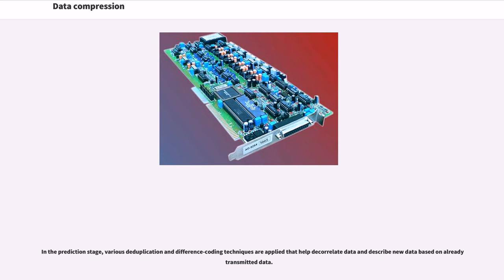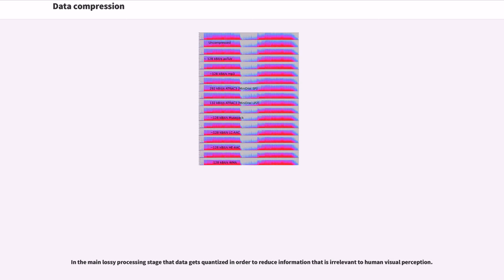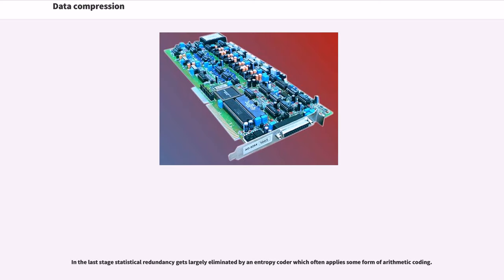In the prediction stage, various duplication and difference coding techniques are applied that help to correlate data and describe new data based on already transmitted data. Then rectangular blocks of residue pixel data are transformed to the frequency domain to ease targeting irrelevant information in quantization and for some spatial redundancy reduction. The discrete cosine transform (DCT) that is widely used in this regard was introduced by N. Ahmed, T. Natarajan and K. Rao in 1974. In the main lossy processing stage that data gets quantized in order to reduce information that is irrelevant to human visual perception. In the last stage statistical redundancy gets largely eliminated by an entropy coder which often applies some form of arithmetic coding.